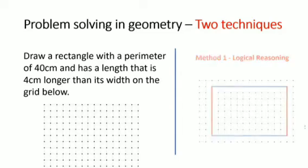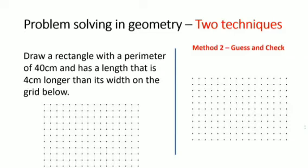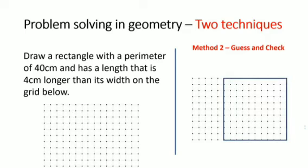Another method we could have employed is called guess and check. Again, even in the guess and check method we assume that the length and the width are distributed equally — in other words, we had a square. If we had a square, each side would have been 40 divided by 4, which is 10 centimeters. To do guess and check we cannot make wild assumptions; we need to make sensible guesses. So starting with the square, we reduce one side.